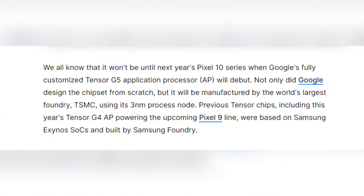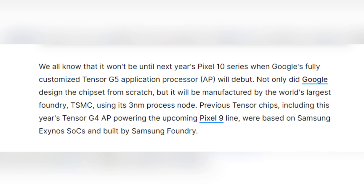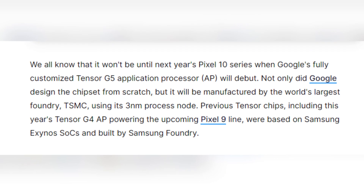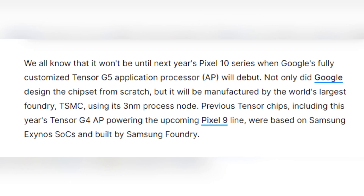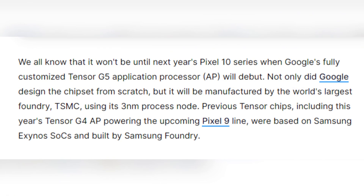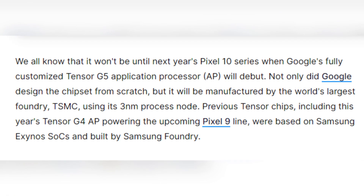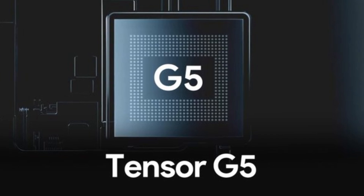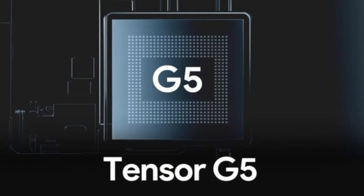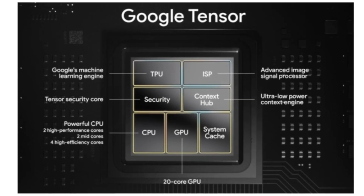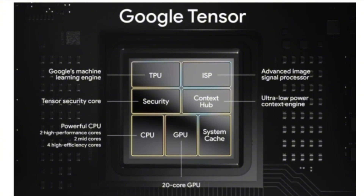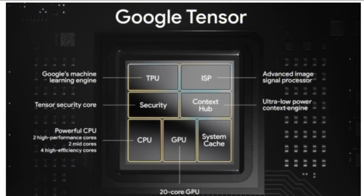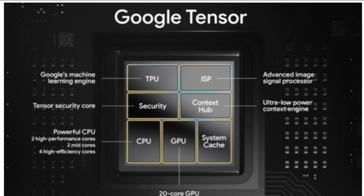The Tensor G5 is shrouded in mystery, but the leaks and rumors paint a promising picture. Built on TSMC's advanced 3nm process and designed from the ground up by Google, it promises to be a technological leap forward. Key areas of focus are expected to include AI acceleration, image processing, and power efficiency. If Google can deliver on these promises, the Tensor G5 could redefine the smartphone experience.